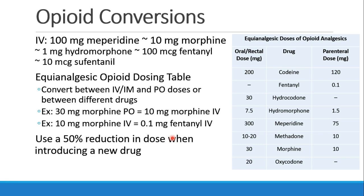Looking at all these different opioids, we may want some way of converting from one to the other, or appreciating the relative strength of each drug. There are a few rules of thumb. When talking about IV drugs, there's a rule of tens, which says that 100 mg of meperidine is equivalent to 10 mg of morphine, which is equivalent to 1 mg of hydromorphone, which is 100 mcg of fentanyl, or 10 mcg of sufentanil.